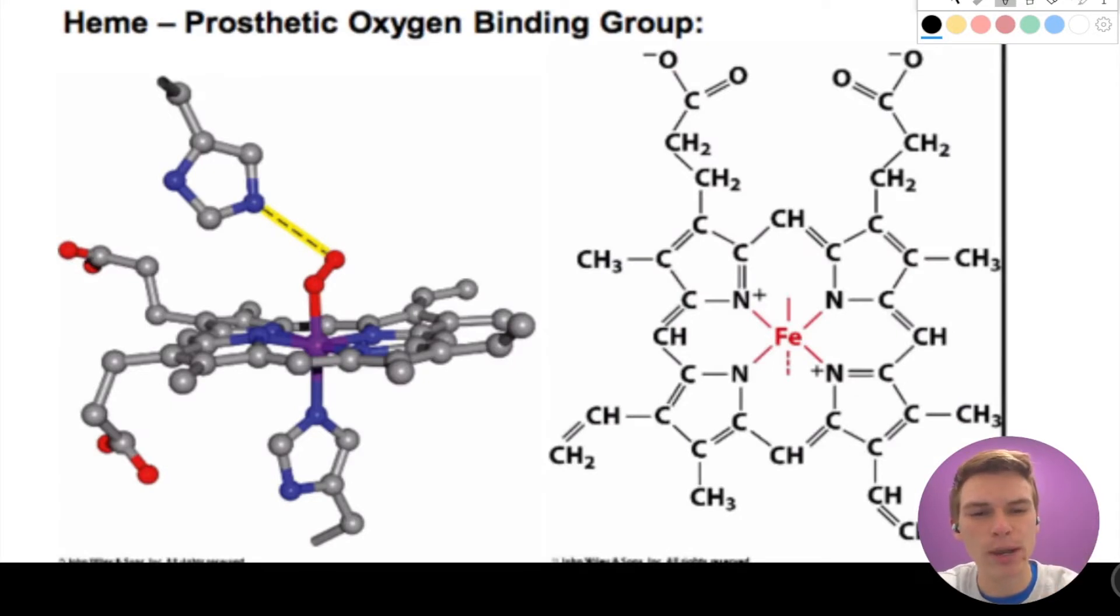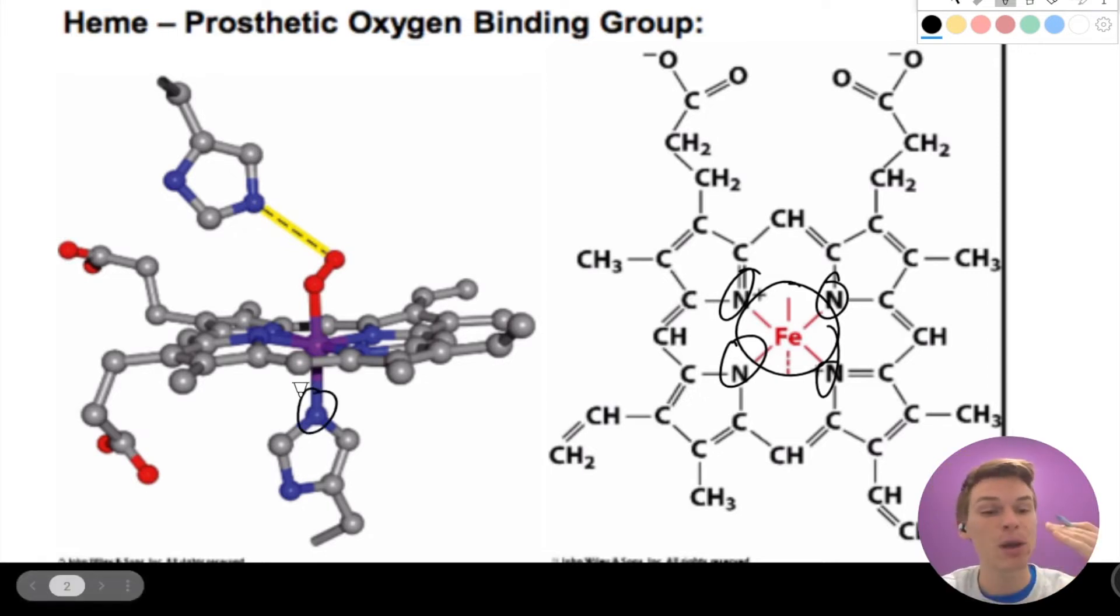If we zoom into the heme group right here, we can see the iron in the center, and that's why it's called the heme group. And it has six coordination or binding sites. Four are taken up by these nitrogens in the pyrrole ring, a fifth is taken up by this proximal histidine, and the sixth can be taken up by lots of different things.